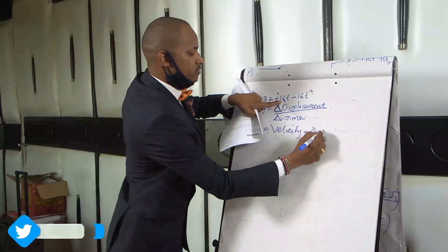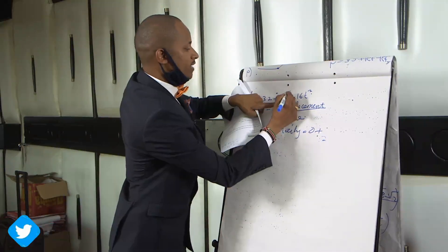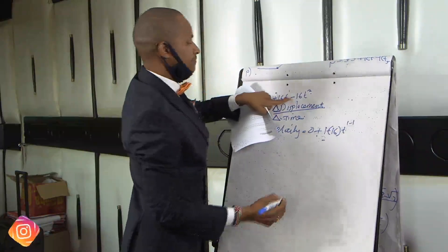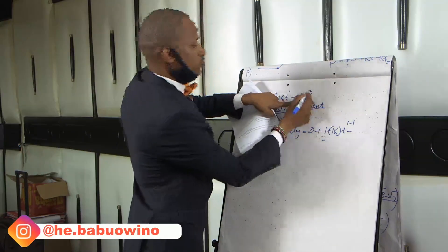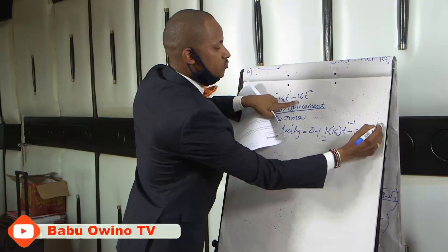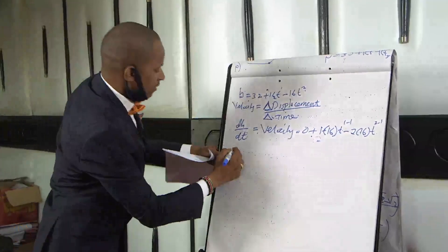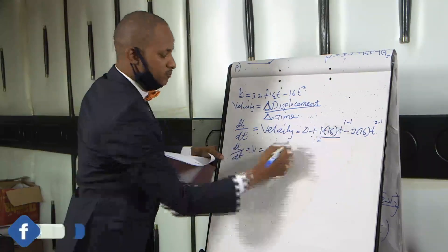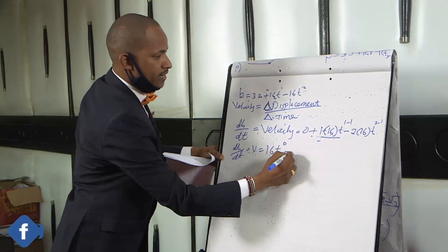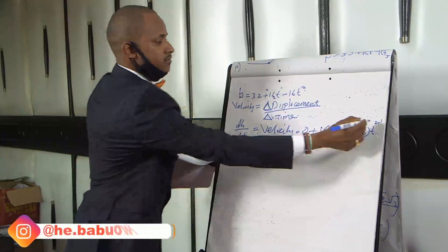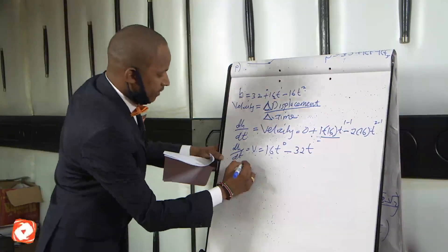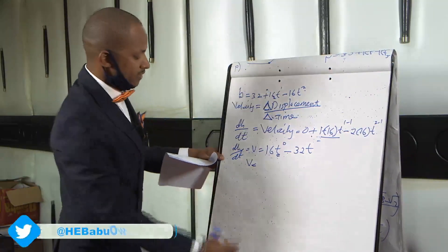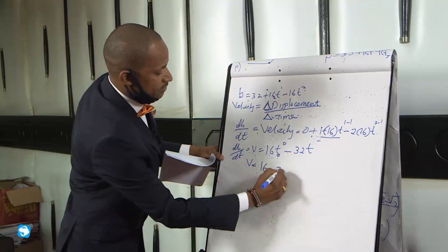So when our displacement or height is h, we differentiate h with respect to t — that is dh/dt — which equals the velocity. When you differentiate 32 you get 0. When you differentiate 16t: drop 1 down, that is 1 times 16, then t to the power 1 minus 1. Minus: drop 2 down, that is 2 times 16, t to the power 2 minus 1.